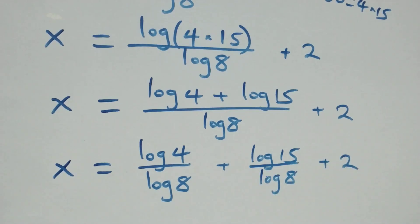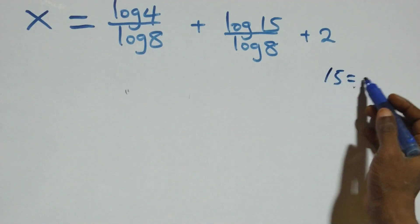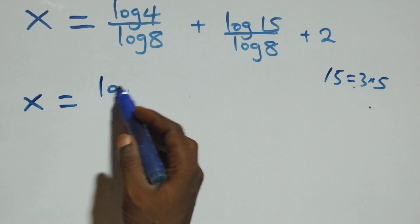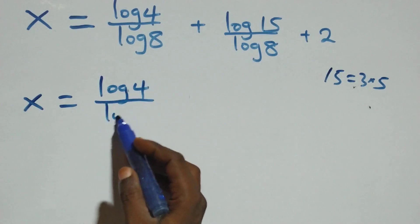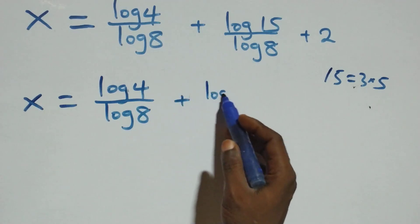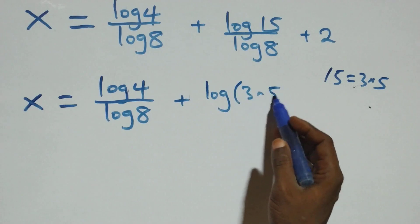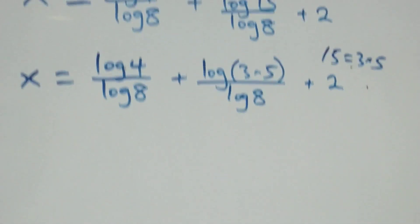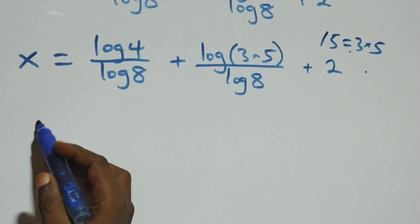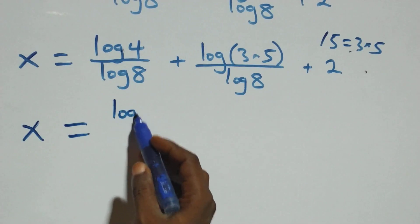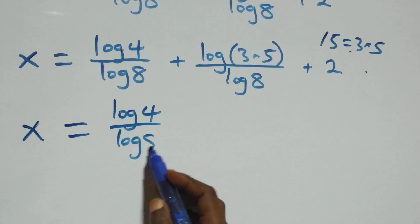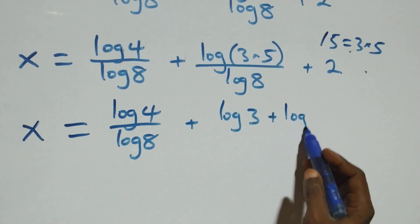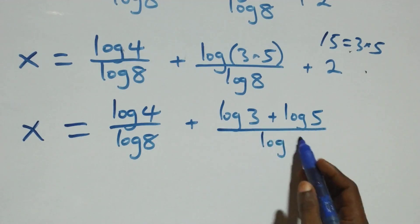Fifteen can be expressed as three times five. So x equals log four over log eight plus log of three times five over log eight plus two. Applying the product rule again: x equals log four over log eight plus log three plus log five, all over log eight, plus two.